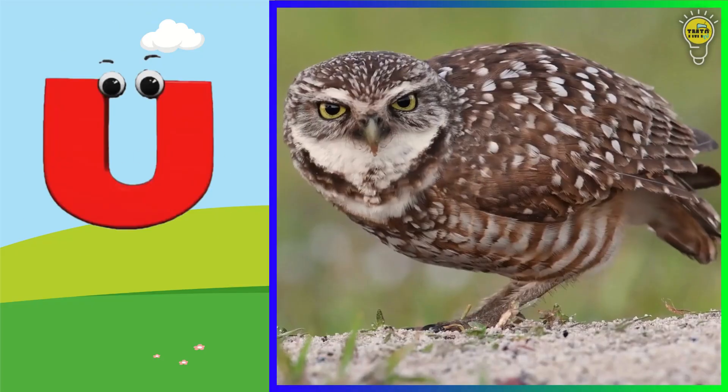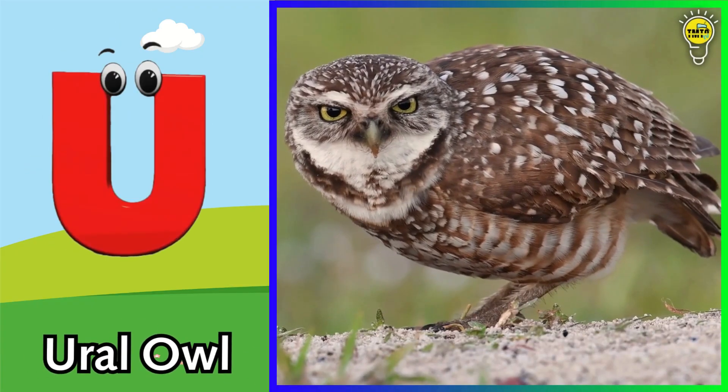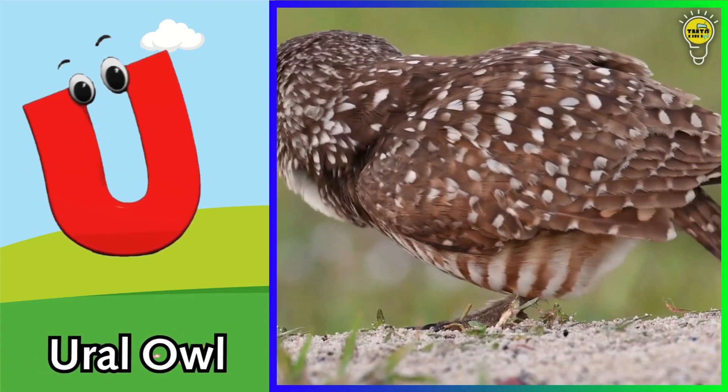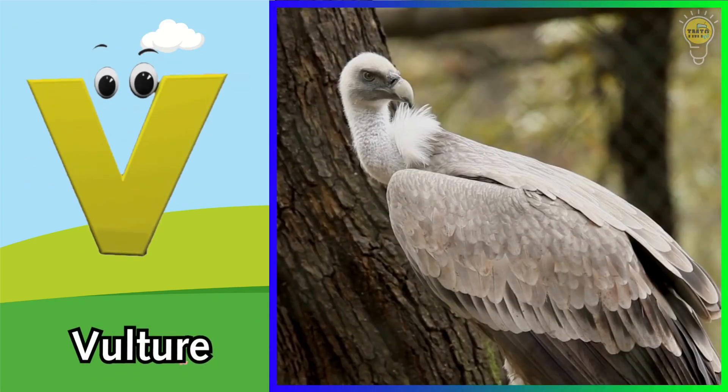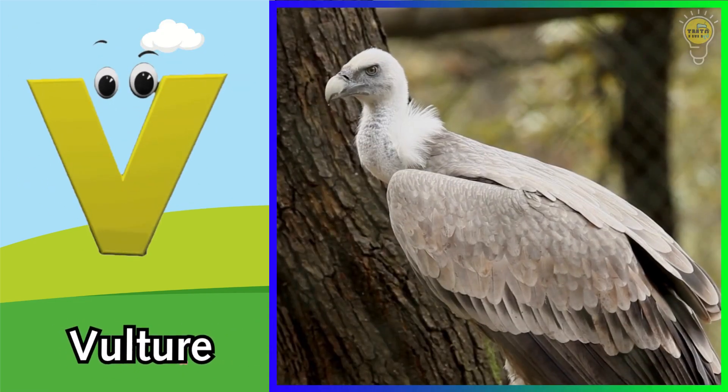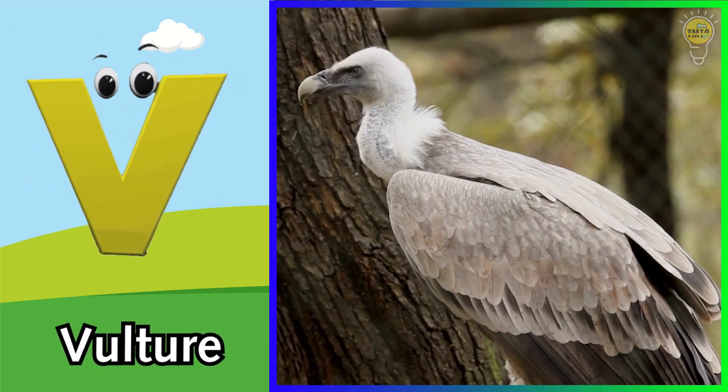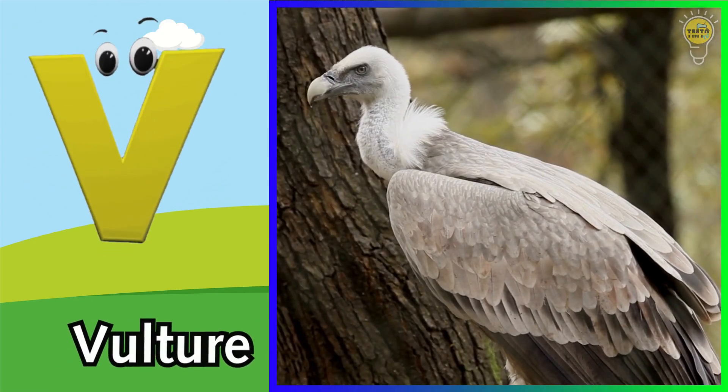U is for ural owl. U, ural owl. V is for vulture. V, vulture.